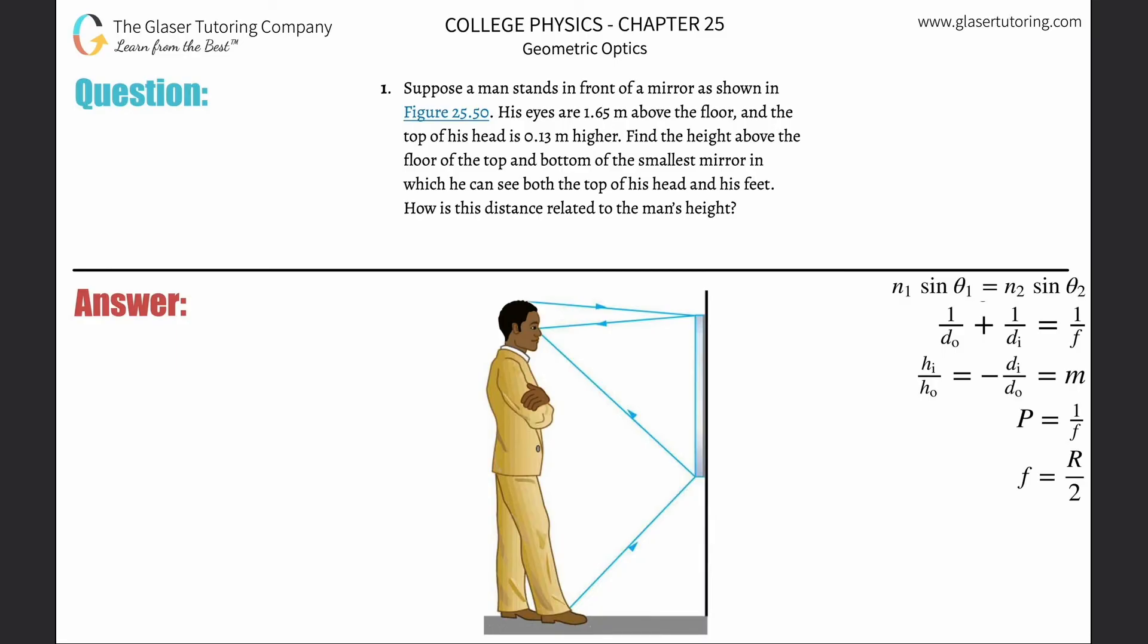Number one: suppose a man stands in front of a mirror shown in the figure below. His eyes are 1.6 meters above the floor and the top of his head is 0.13 meters higher than his eyes. Find the height above the floor of the top and bottom of the smallest mirror in which you can see both the top of his head and his feet.